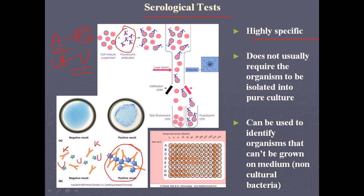We can also use this kind of test with fluorochromes — attaching fluorescent dyes to the antibody. We make a suspension of cells and add those antibodies. If the bacterial antigen is recognized by the antibody, the bacterial cells will be agglutinated, and we can observe the fluorescence amount to determine how much bacterial cell is being agglutinated — confirming that bacteria A and B are related.